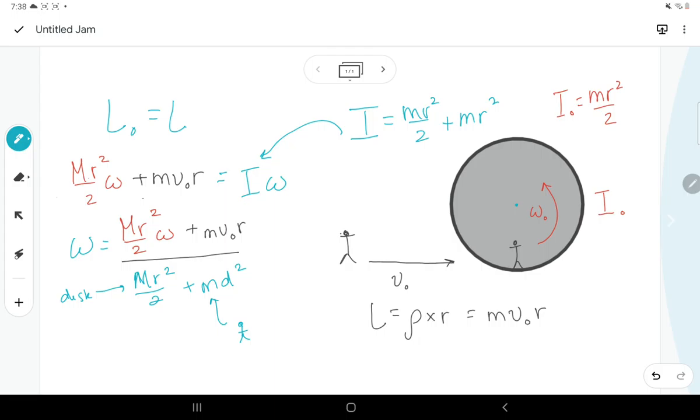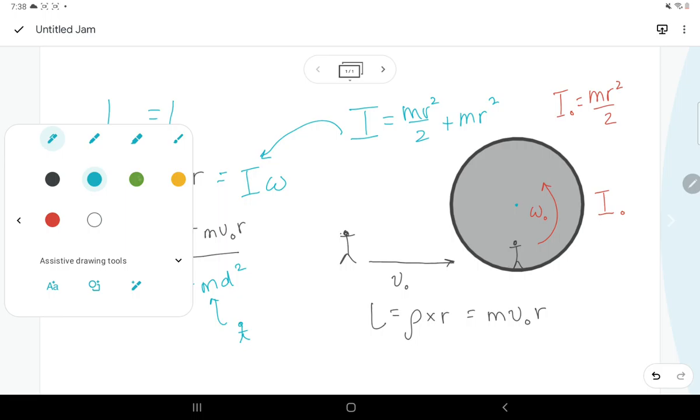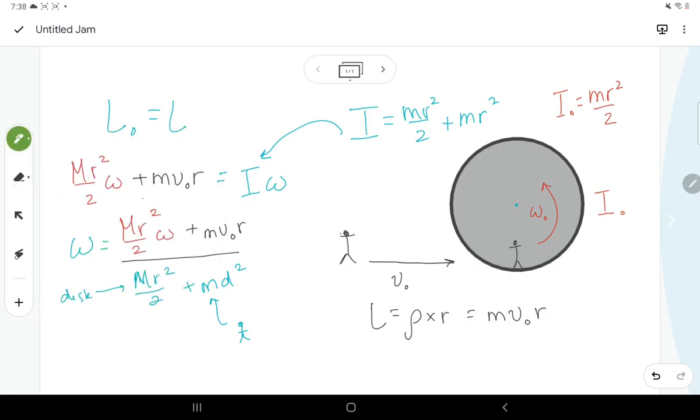So I hope that makes more sense, but the only difference is if you were spinning to the right, or I should say if you're spinning clockwise, then you would have a negative mr squared over 2 times omega. I hope that makes sense, let me know if you have any questions.